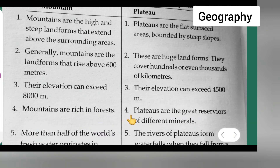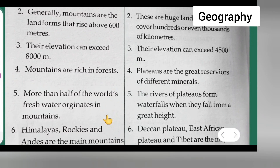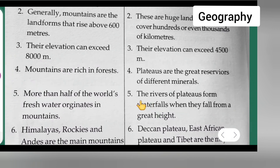Fourth point under mountain: mountains are rich in forest. Fourth point under plateau: plateaus are the great reservoir of different minerals. Fifth point under mountain: more than half of the world's fresh water originates in mountains. Fifth point under plateau: the rivers of plateaus form waterfalls when they fall from a great height.